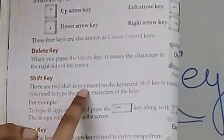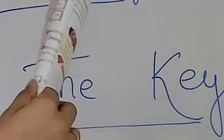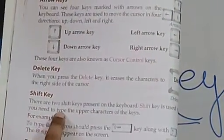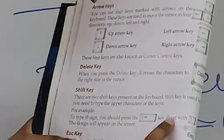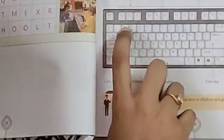Shift key. There are two shift keys present on the keyboard. The shift key is used when you need to type the upper characters of the keys. For example, the at sign — you should press the shift key along with the 2 key. The small characters on the top of the number keys are called the upper characters, such as the exclamation mark, at sign, and hash sign.